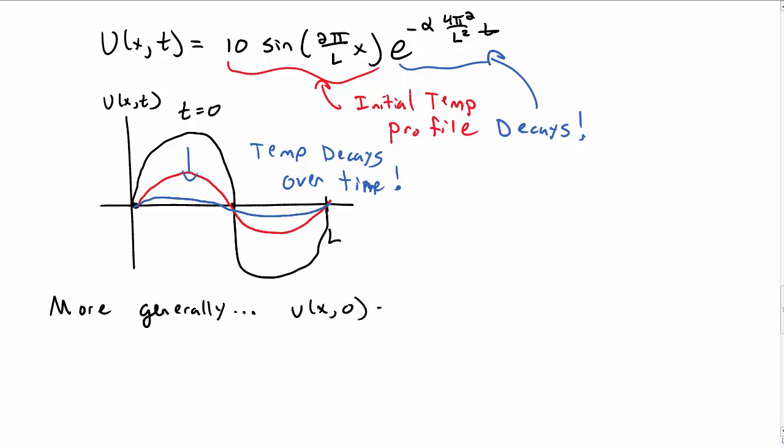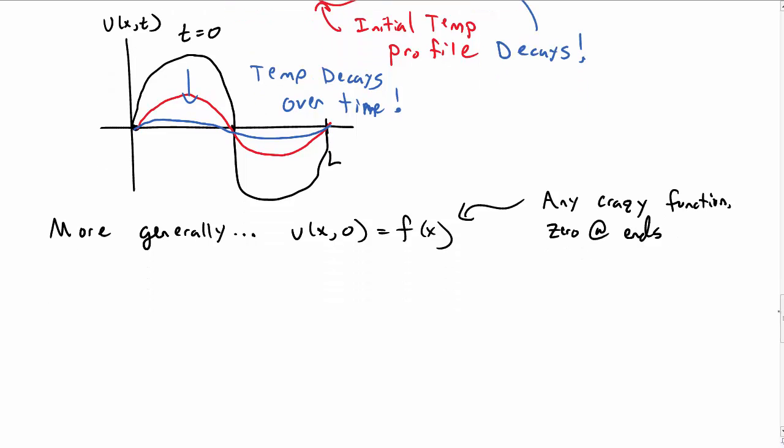More generally, let's say that our initial condition is some function of x, which could be any crazy function that you want. Well, not any crazy function that you want. It really should be 0 at the ends, since that's what our boundary conditions were.